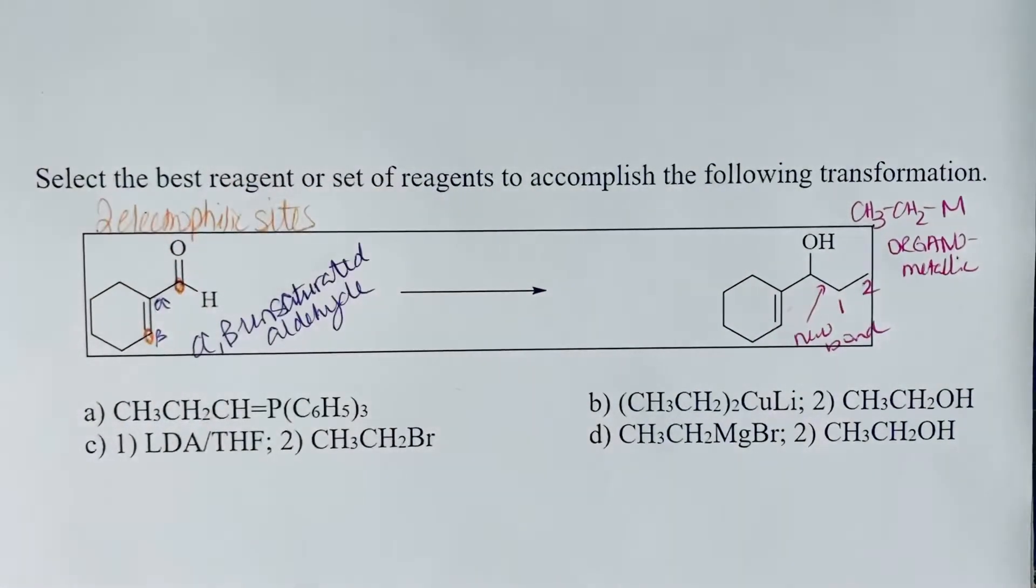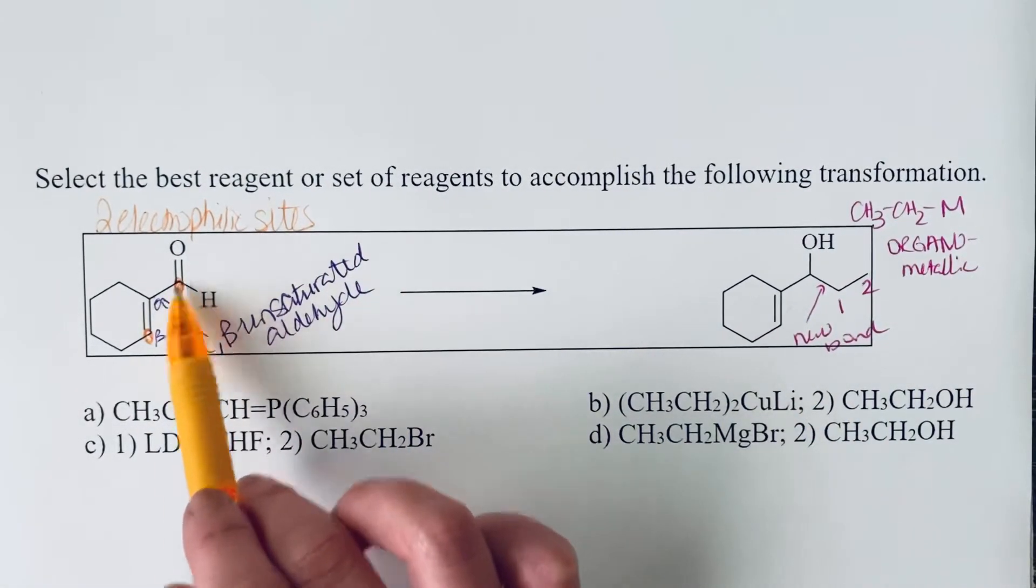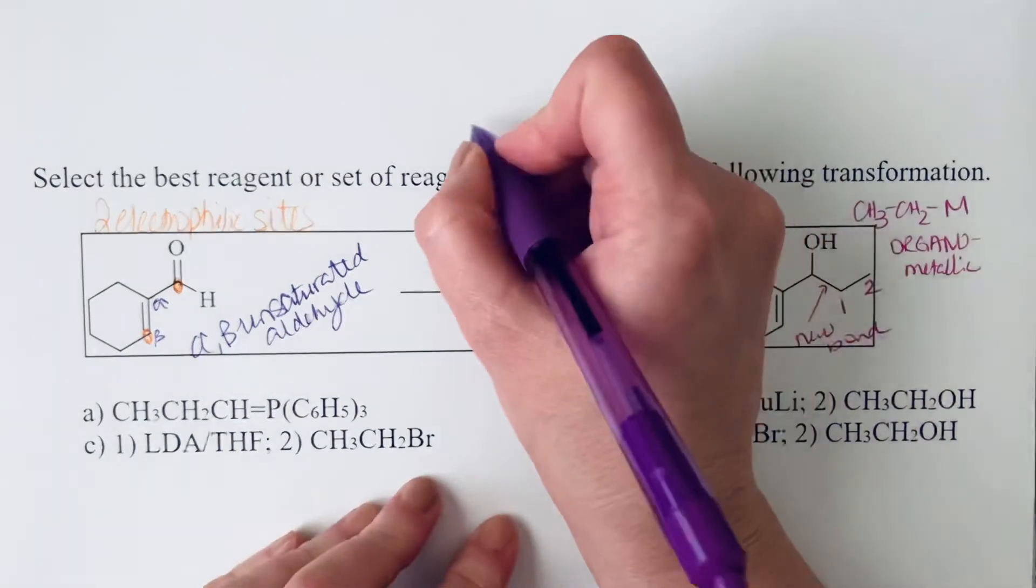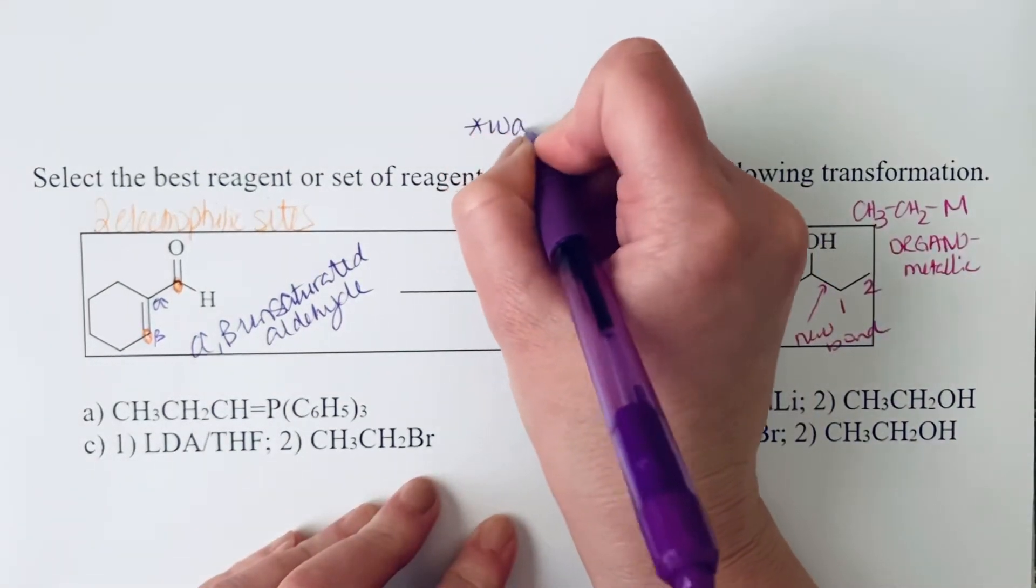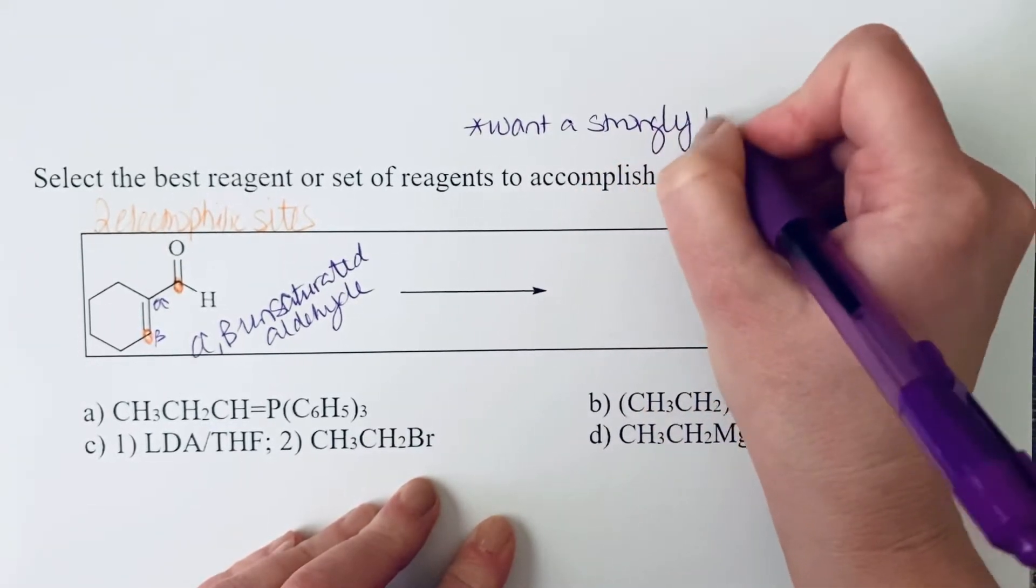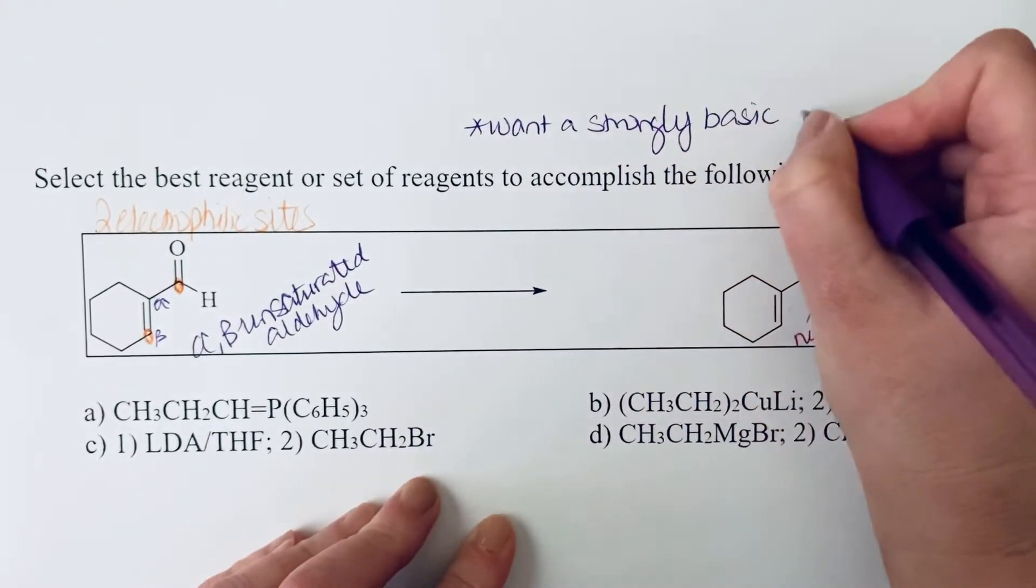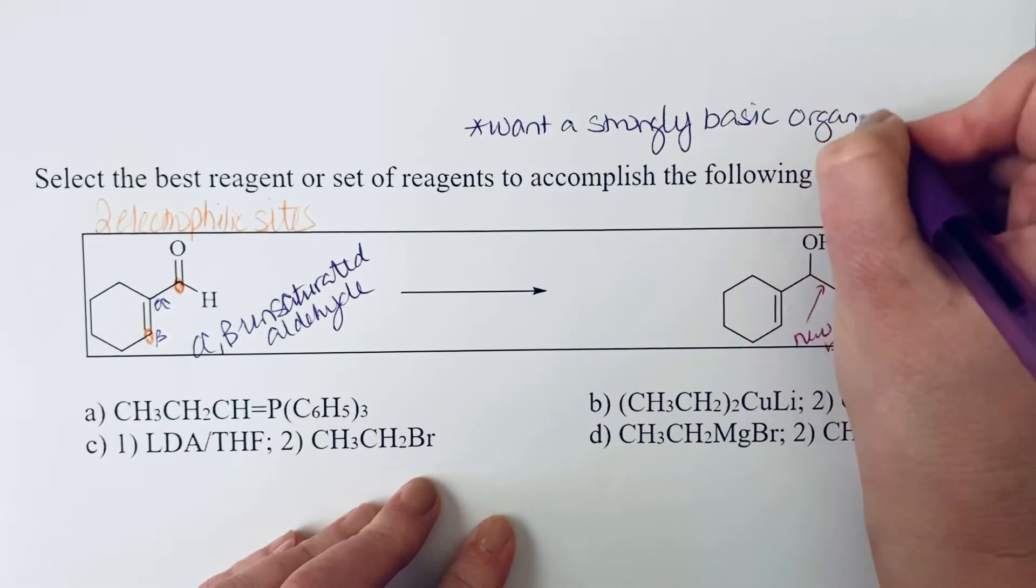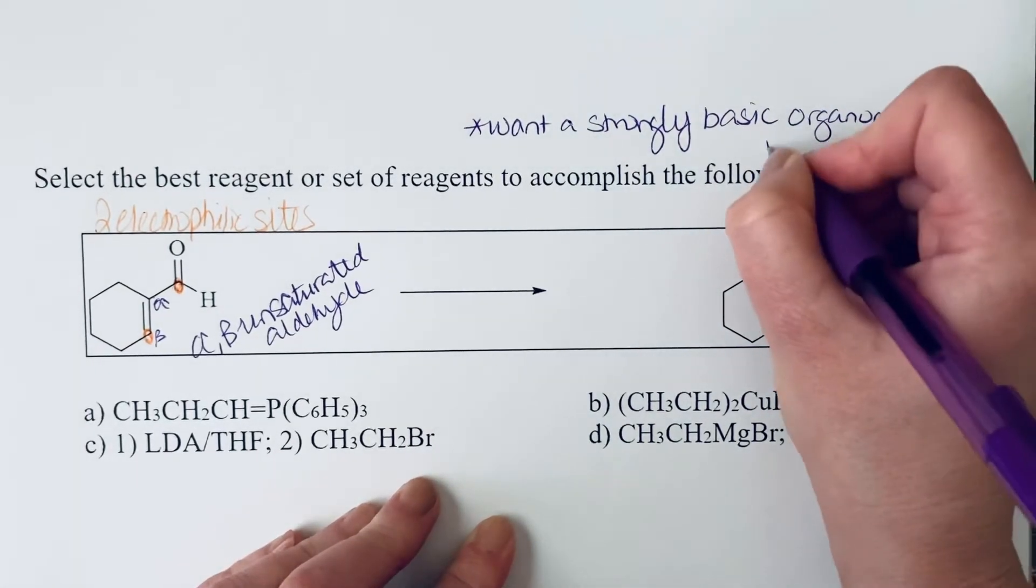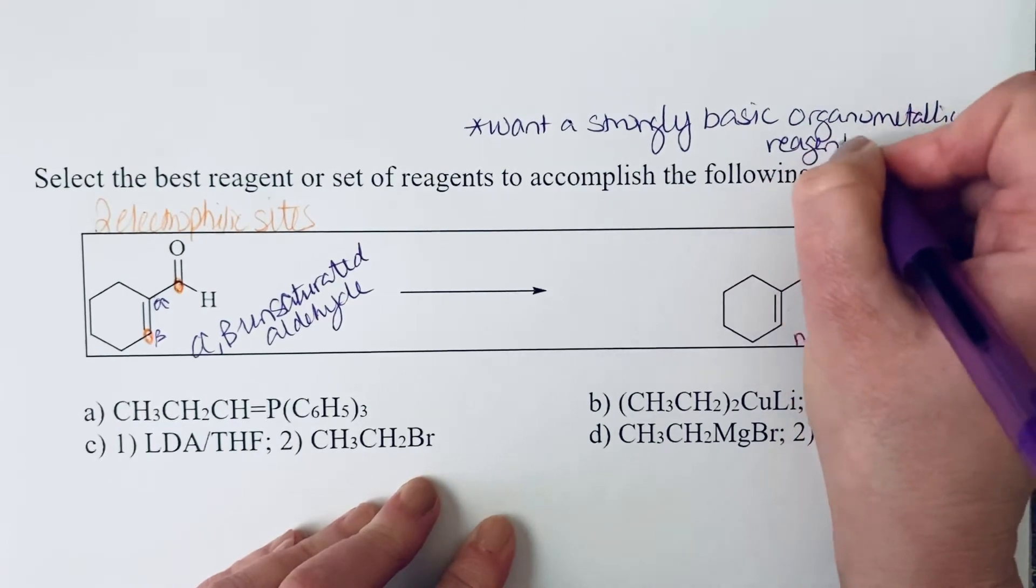So if we want our organometallic reagent to react with the carbonyl carbon, we need it to be a strong base. We want one of our more reactive organometallic reagents. We want a strongly basic organometallic reagent.